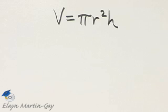Let's find the volume of this cylinder and remember your formula for volume. Volume is pi times radius squared times height.